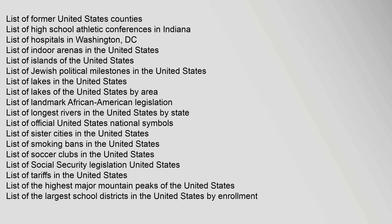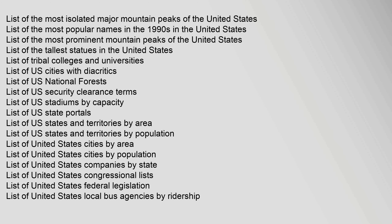List of Landmark African American Legislation, List of Longest Rivers in the United States by State, List of Official United States National Symbols, List of Sister Cities in the United States, List of Smoking Bans in the United States, List of Soccer Clubs in the United States, List of Social Security Legislation United States, List of Tariffs in the United States, List of the Highest Major Mountain Peaks of the United States, List of the Largest School Districts in the United States by Enrollment, List of the Most Isolated Major Mountain Peaks of the United States, List of the Most Popular Names in the 1990s in the United States, List of the Most Prominent Mountain Peaks of the United States.